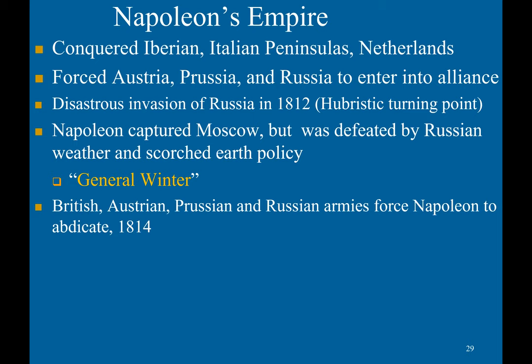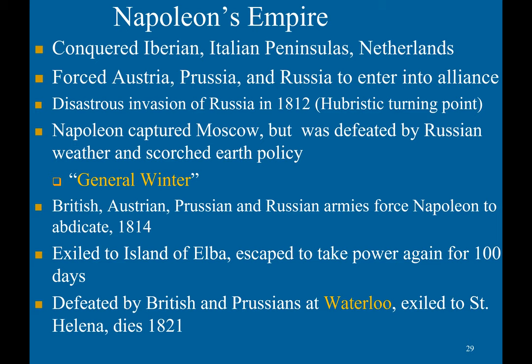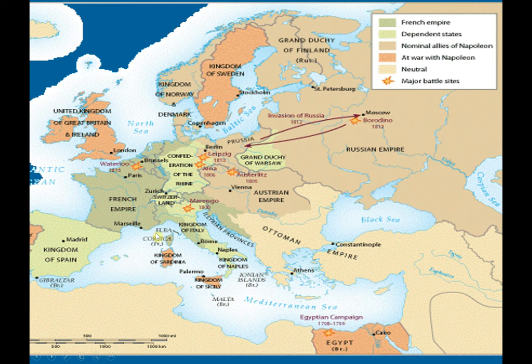The British, Austrian, Prussian, and Russian armies forced Napoleon to abdicate in 1814. He was exiled to the island of Elba, escaped to take power again for 100 days, before being defeated again by the British and Prussians at Waterloo, after which he was exiled to St. Helena and died there in 1821. This is a map depicting Napoleon's empire and his allies — as we can see, he conquered a vast amount of territory but was stopped by the Russians and pushed back.